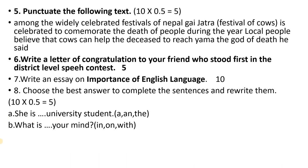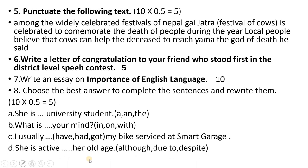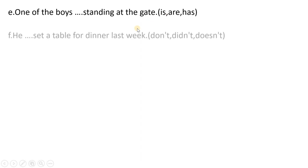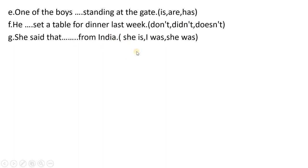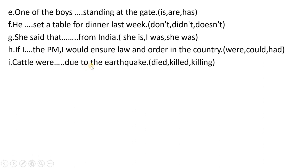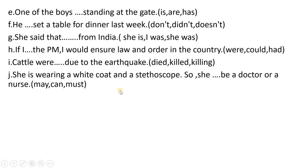The grammar items cover articles — choose 'a' or 'the'. There is a preposition question, a tense question, a connective question, an active voice question, error correction, subject-verb agreement, a question about which verb is suitable, a negation item, a reported speech item, a conditional sentence item, a passive voice item, and a modal possibility item. You can choose the correct answer for each.